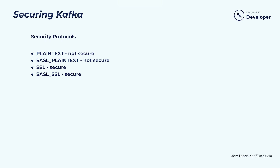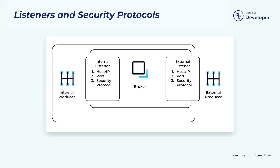Since this course is about securing Kafka, we'll only be taking a look at SSL and SASL SSL. A broker can be configured with more than one listener — that is, there may be several address, port, and security protocol combinations that can be used to reach the broker.